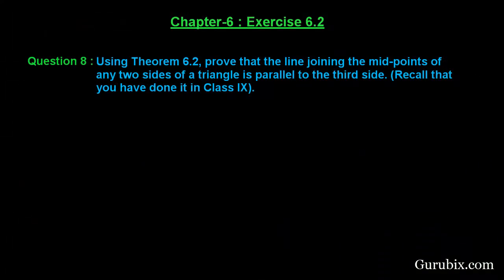Welcome friends, let us solve question number 8 of exercise 6.2 of chapter 6. The question says using theorem 6.2, which is the converse of the basic proportionality theorem, or converse of BPT, prove that the line joining the midpoints of any two sides of a triangle is parallel to the third side.